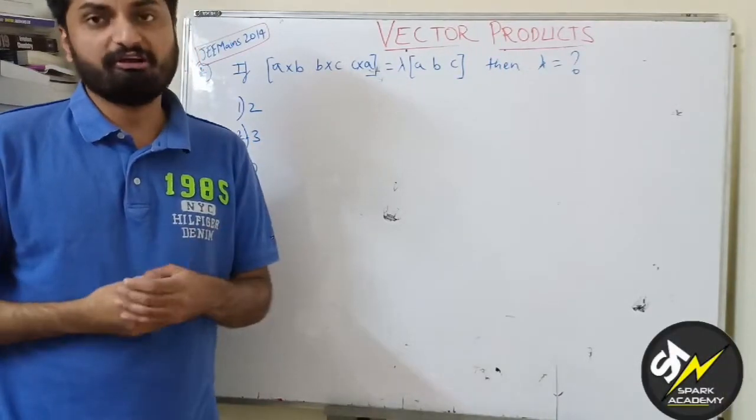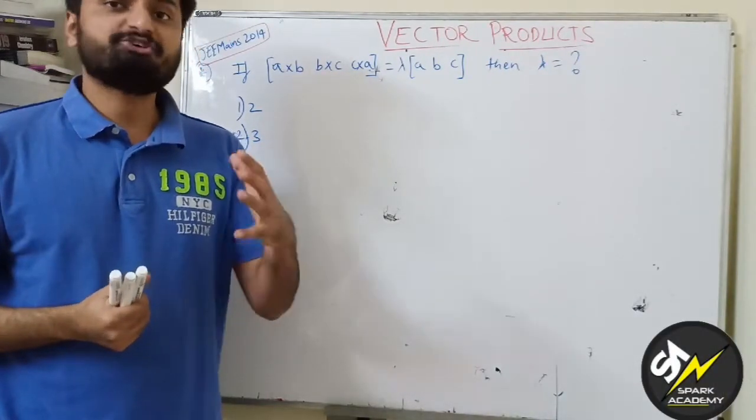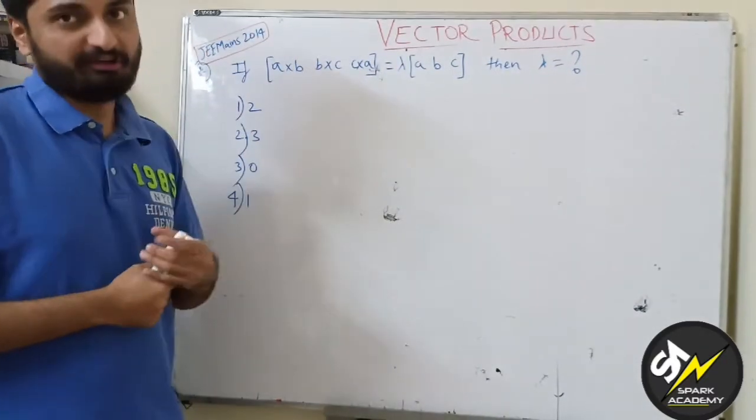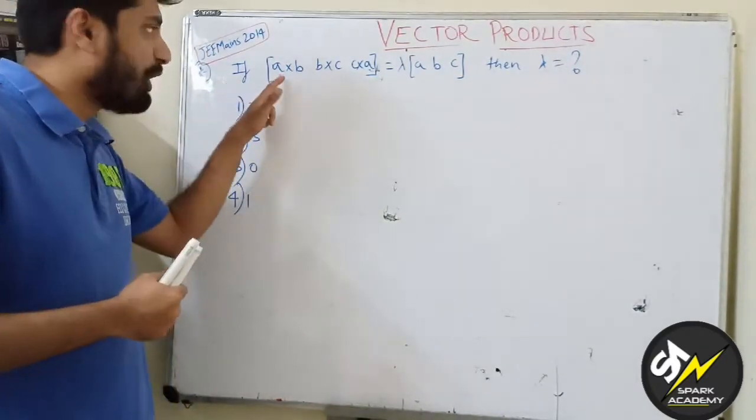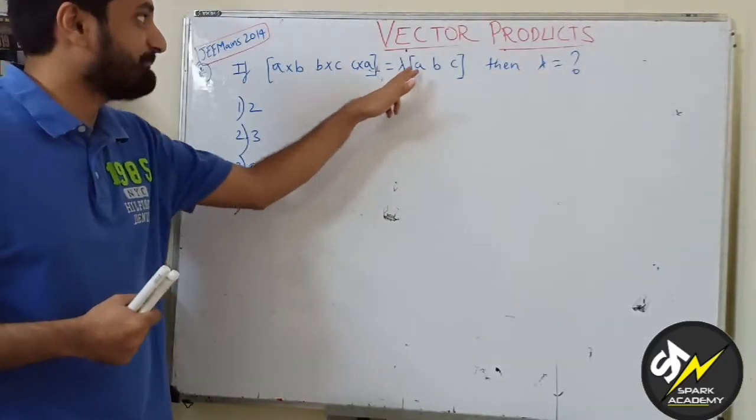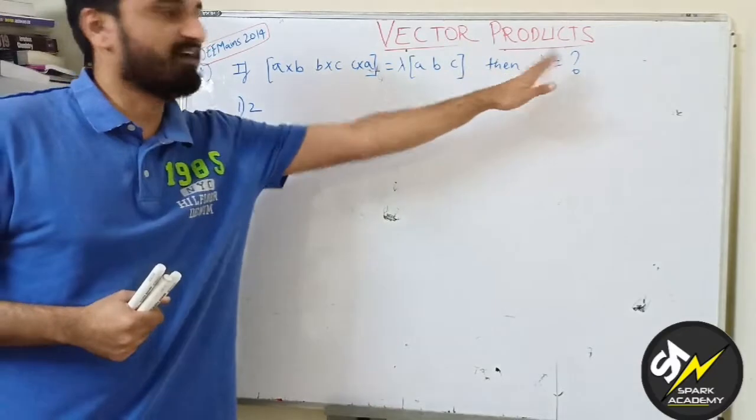In this video we will talk about a question based on triple products which was asked in JEE Mains 2014. The question is: if box(a×b, b×c, c×a) is λ times box(a,b,c), then what is the value of λ?